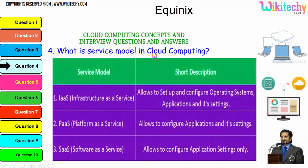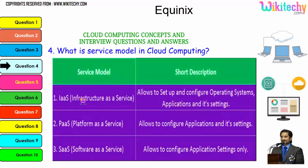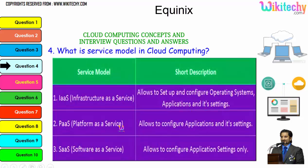What is the service model in cloud computing? There are three major service models. The first is infrastructure as a service, where you are allowed to set up and configure the operating system, applications, and settings — you are given a server and can put whatever you want on it. Platform as a service gives you a specified operating system and you can add any applications and settings. Software as a service gives you the software and you can do whatever application settings you want. That's how the cloud service models work.